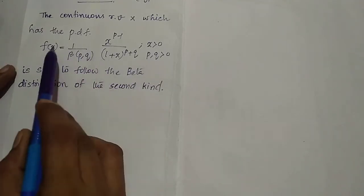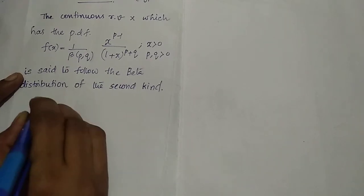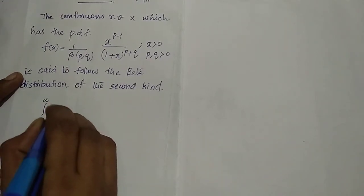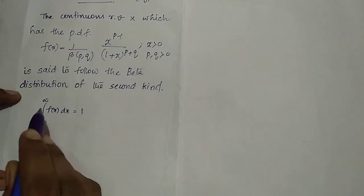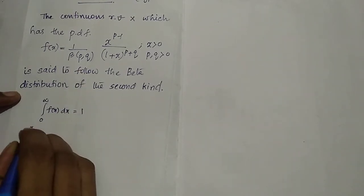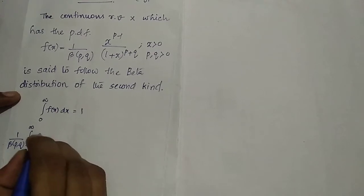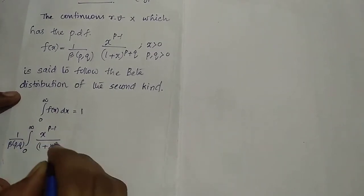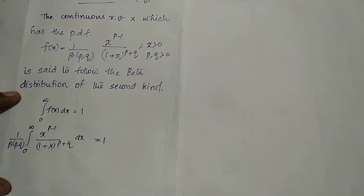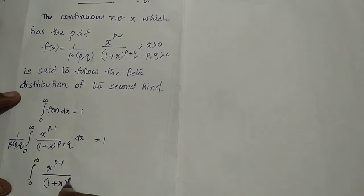We will derive the result that the integral from 0 to infinity of f(x) dx equals 1. That is, the PDF over the range 0 to infinity integrates to unity. So, integral from 0 to infinity of f(x) dx = (1/β(p,q)) · integral from 0 to infinity of x^(p-1) / (1+x)^(p+q) dx = β(p,q), confirming the result equals 1.